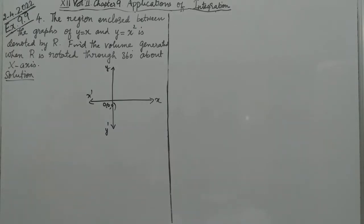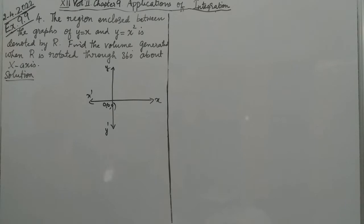Hello students. We will do Exercise 9.9, sum number 4. The region enclosed between the graphs of y equals x and y equals x-squared is denoted by capital R. Find the volume generated when capital R is rotated through 360 degrees about the x-axis.